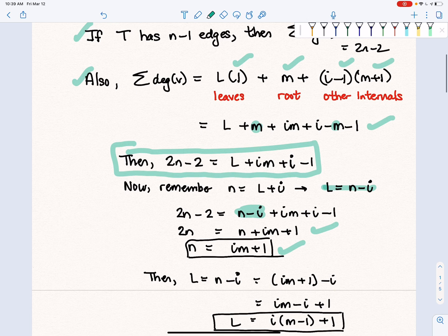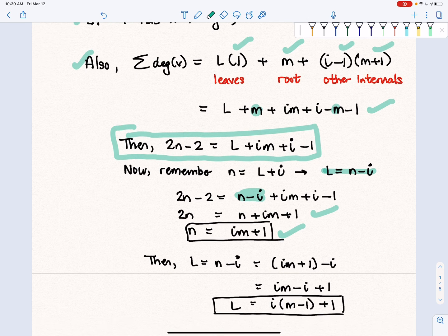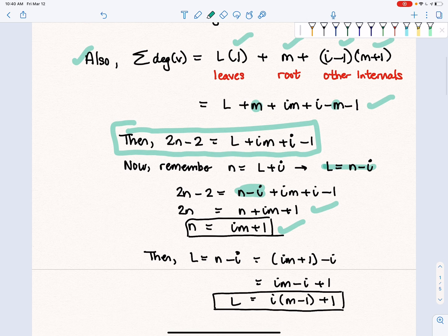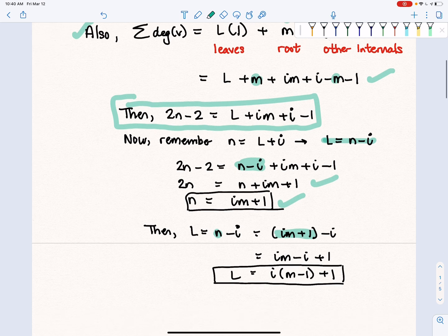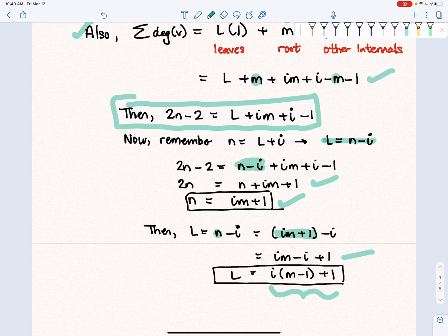Then, to get the number of leaves, we want an expression that doesn't necessarily involve N. We know that the number of leaves is N minus I. So I'm going to replace N by what we just found. Rearrange the terms and factor the I out, and there's our formula.